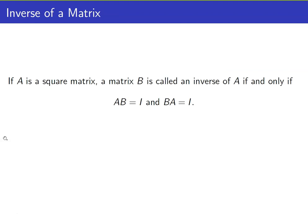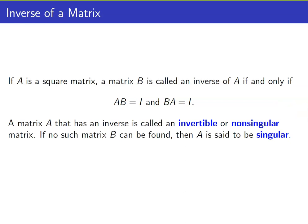If A is a square matrix, a matrix B is called an inverse of A if and only if the following conditions hold: AB is equal to I and BA is also equal to I, where I is the identity matrix. Take note that the inverse of a matrix can only exist for square matrices. The product of a matrix with its inverse, whether you multiply the inverse from the left or from the right, should give the identity matrix. If a matrix has an inverse, we call it invertible. If we cannot find such a matrix B, we say that A is singular.